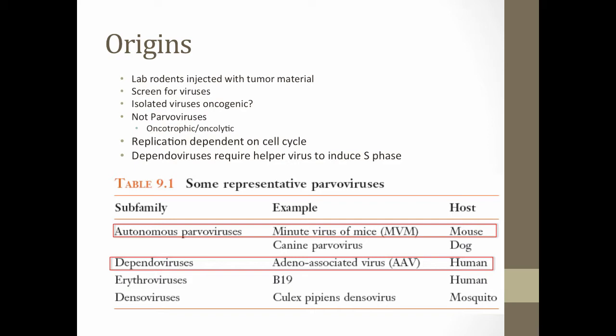Briefly on origins: where do these small single-stranded DNA viruses come from? If you inject lab rodents — mice — with tumor material and screen for viruses, a lot of times what comes out are these small single-stranded DNA viruses. You could assume that because you injected tumor material, the viruses you get out are oncogenic — meaning they give rise to tumors, give rise to cancer. It turns out they actually aren't oncogenic, at least not in the case of parvoviruses. They are what you would call oncotrophic — they have a need for the S phase of the cell cycle to replicate their genomes and depend on proteins present during cell replication. So they aren't oncogenic, they're oncotrophic. We'll go through how they are potentially oncolytic — meaning they could potentially be used as a tool for fighting cancer.